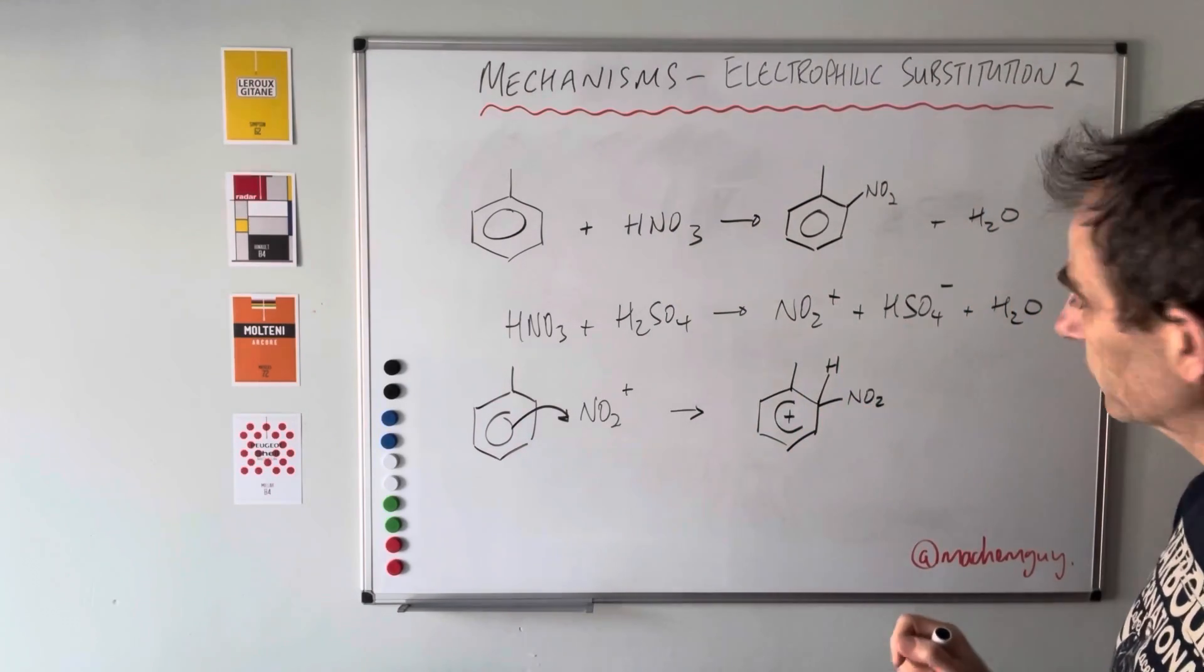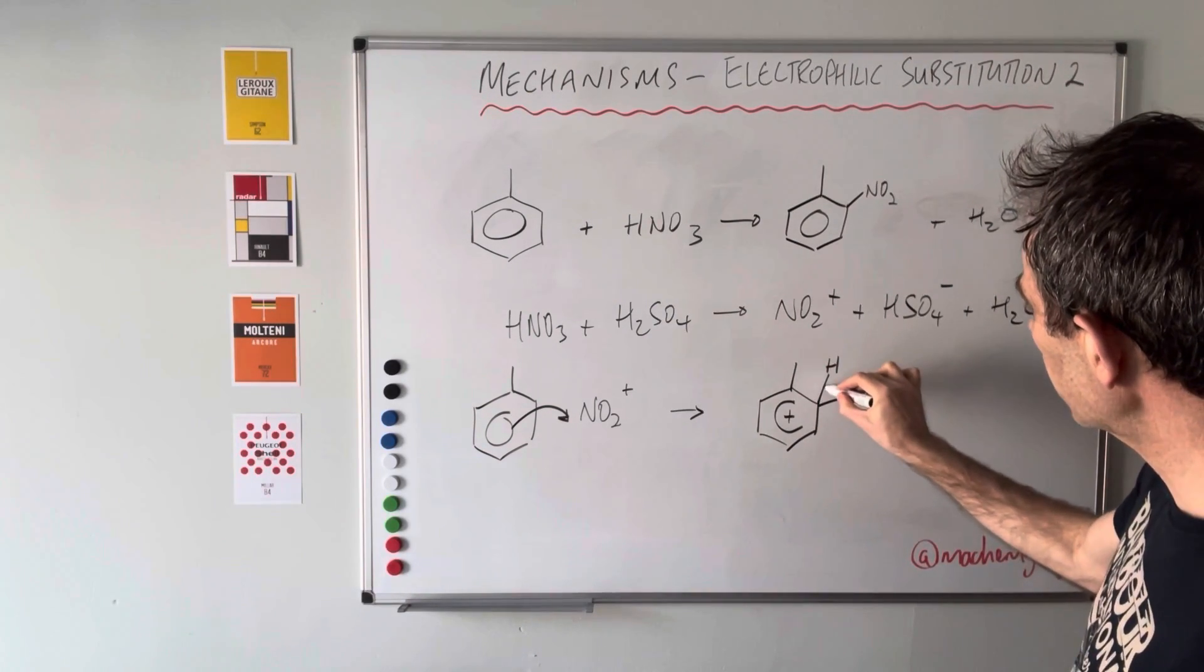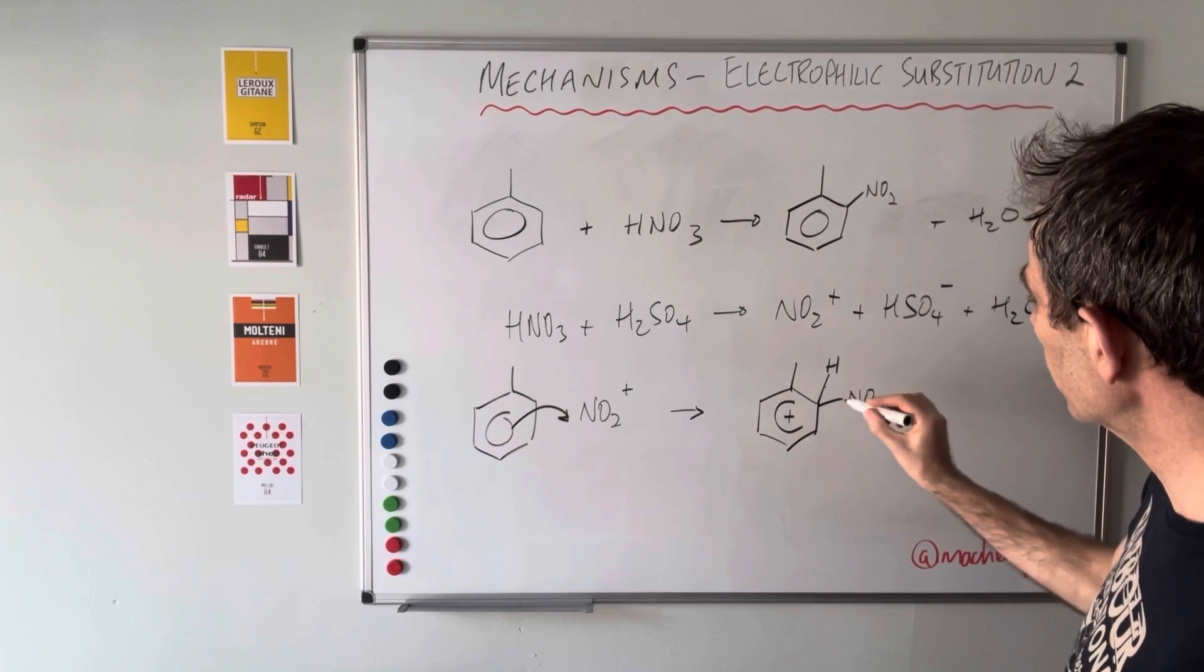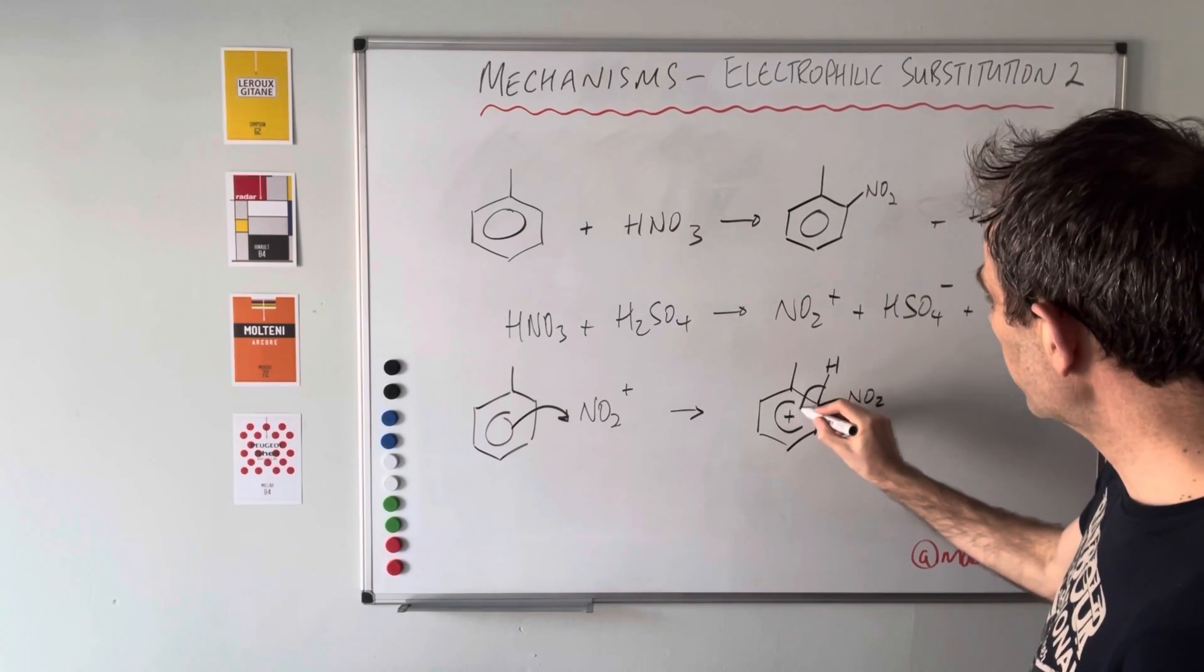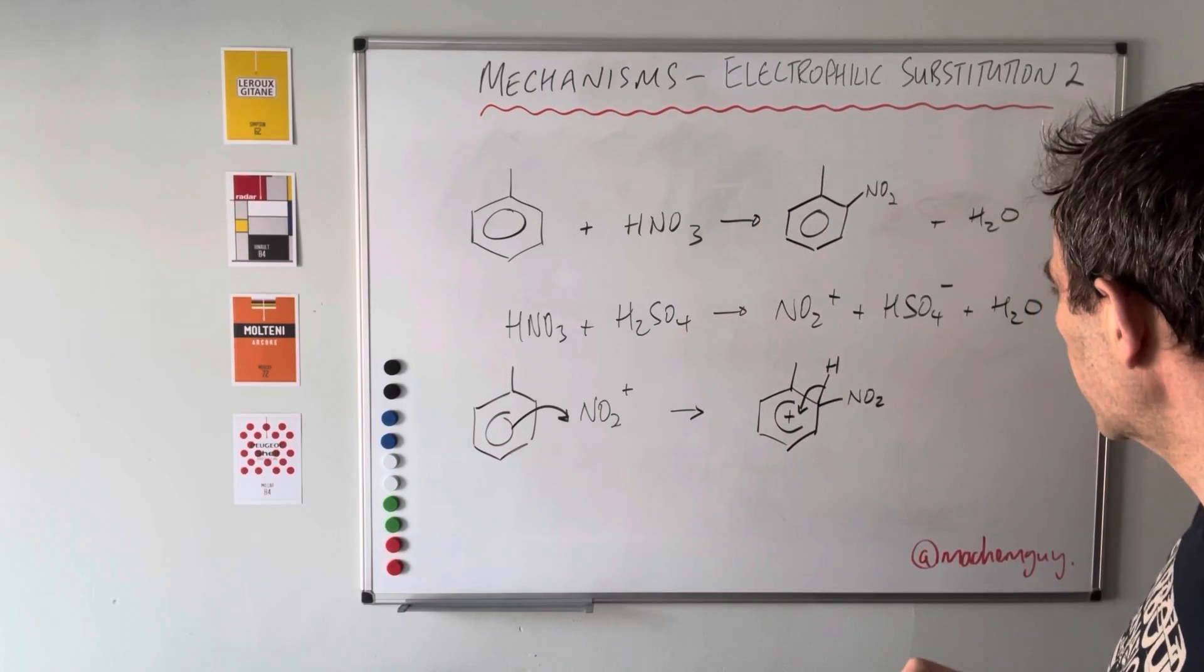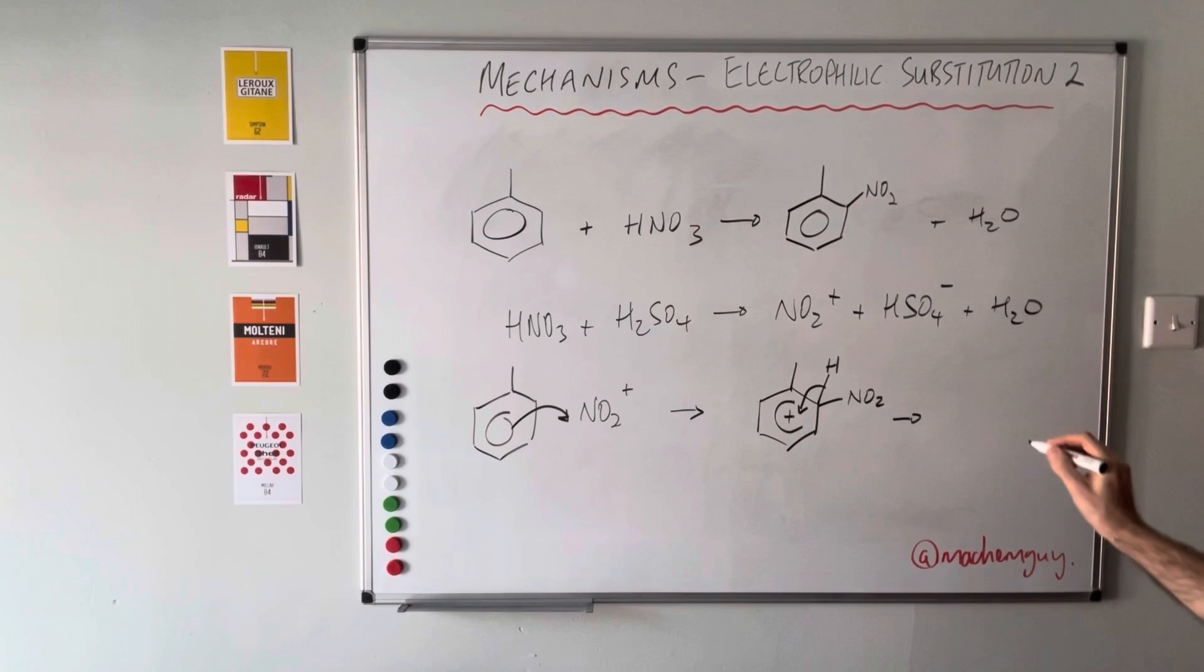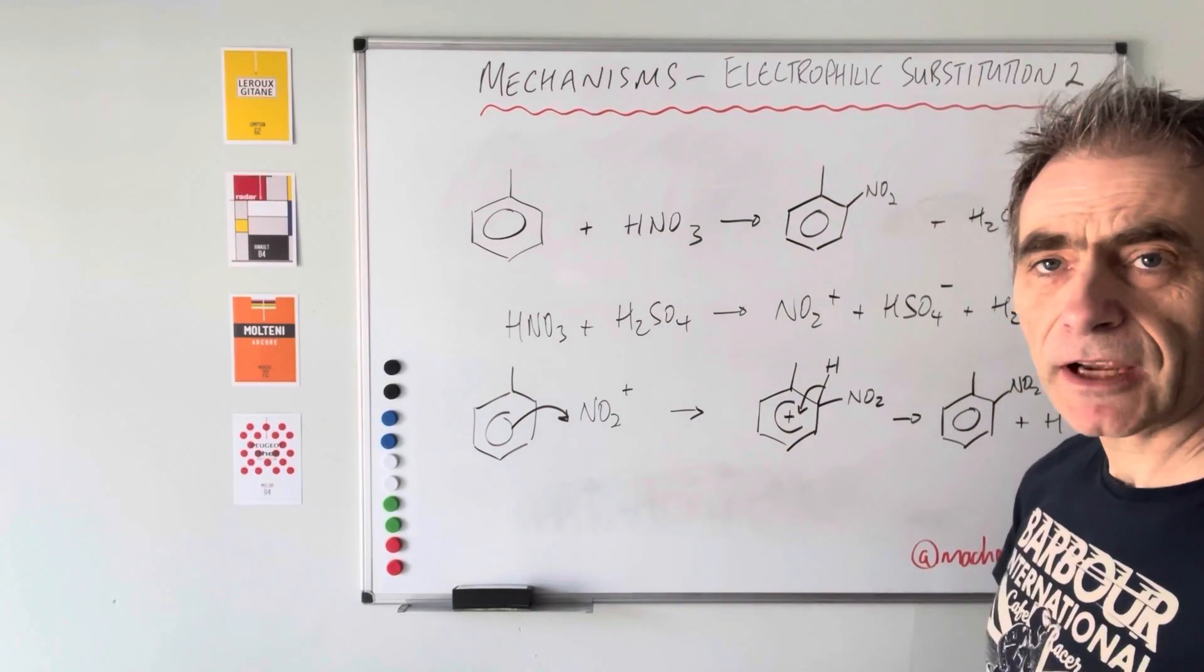We now need to stabilize that, so we do that by taking a pair of electrons from this carbon-hydrogen bond and feed it back to reform that pi ring of pi electrons. That's going to generate the product, and that H will come off as an H plus ion.